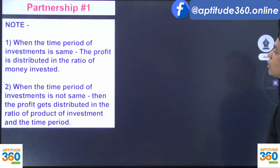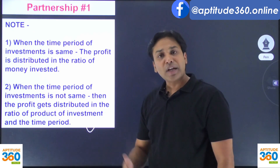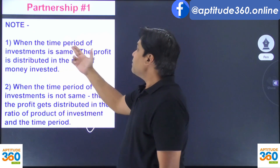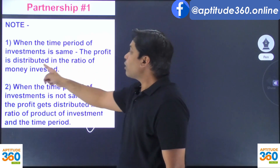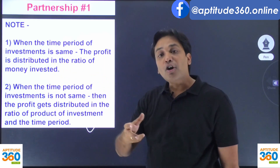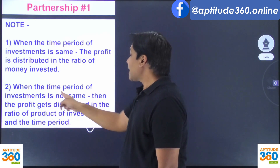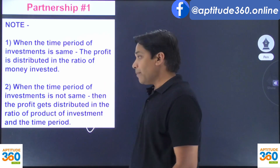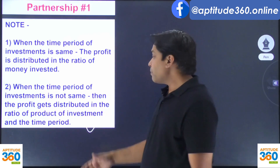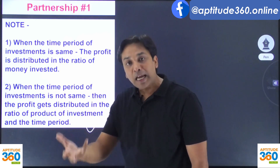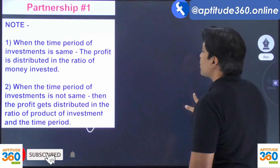So here are the two things you learned: when the time period of investment is the same, profit is distributed in the ratio of their capital invested. When the time period is not the same, multiply each partner's investment by their respective time period to find the profit ratio.